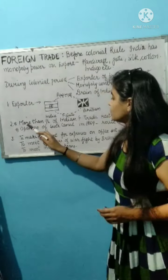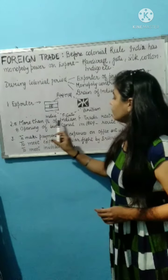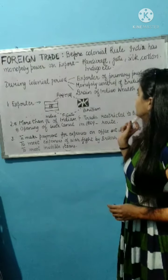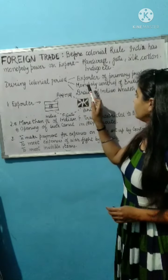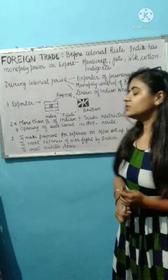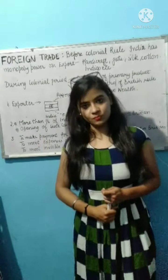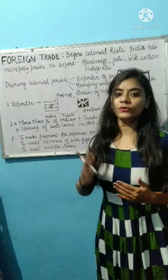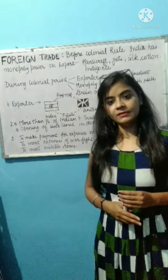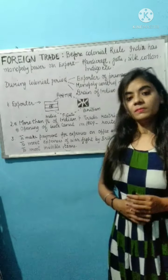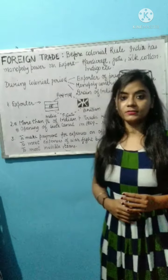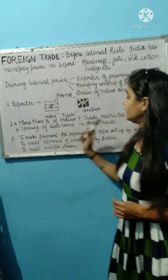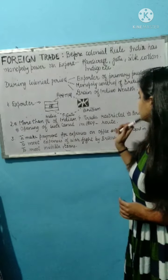The next point is: more than half of the Indian foreign trade was restricted to Britain. This is our second point — monopoly control of the British rule. It was monopoly. When you have a right that you can sell the product and control the market — that is monopoly right. So more than half of the Indian foreign trade was restricted to Britain.